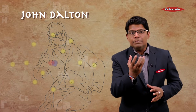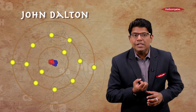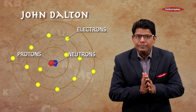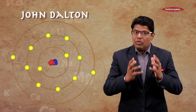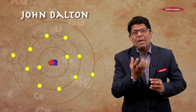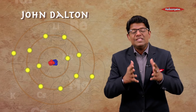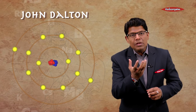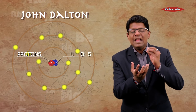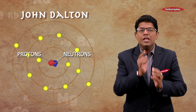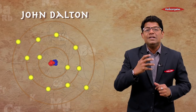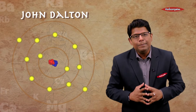Now, what is atomic mass? We know that an atom is made up of subatomic particles such as protons, neutrons, and electrons, and the total mass of electrons is always negligible. So atomic mass is the total mass of protons and neutrons together present in the nucleus of an atom, and this was considered a fundamental property.